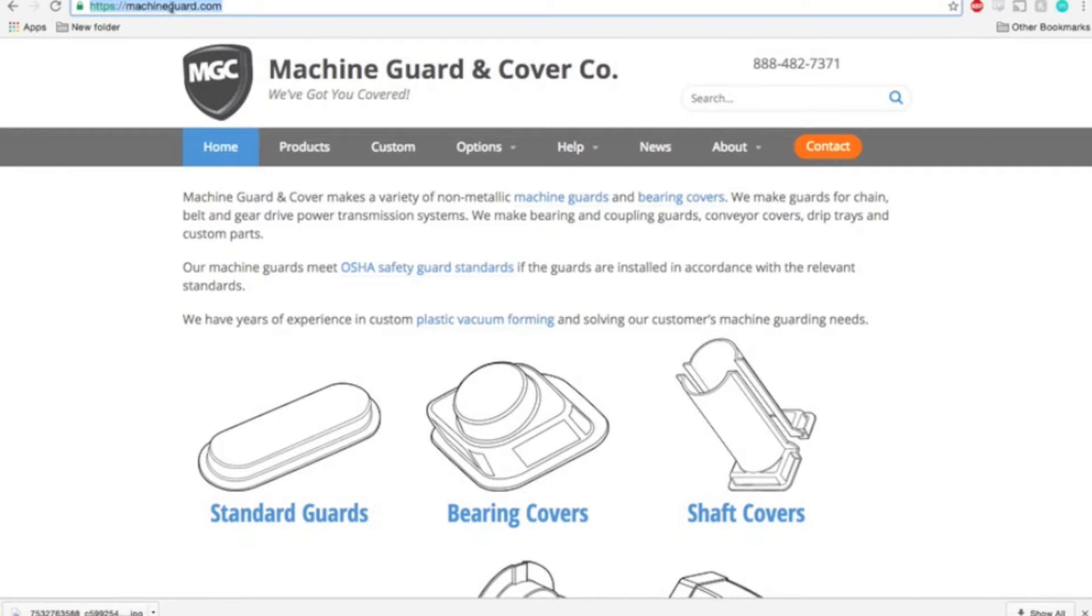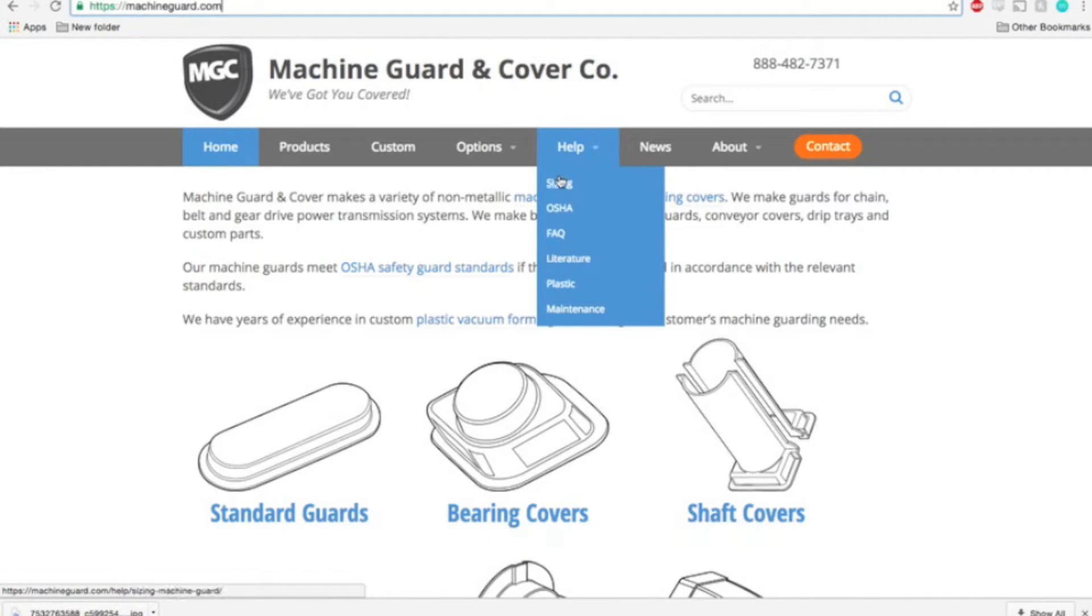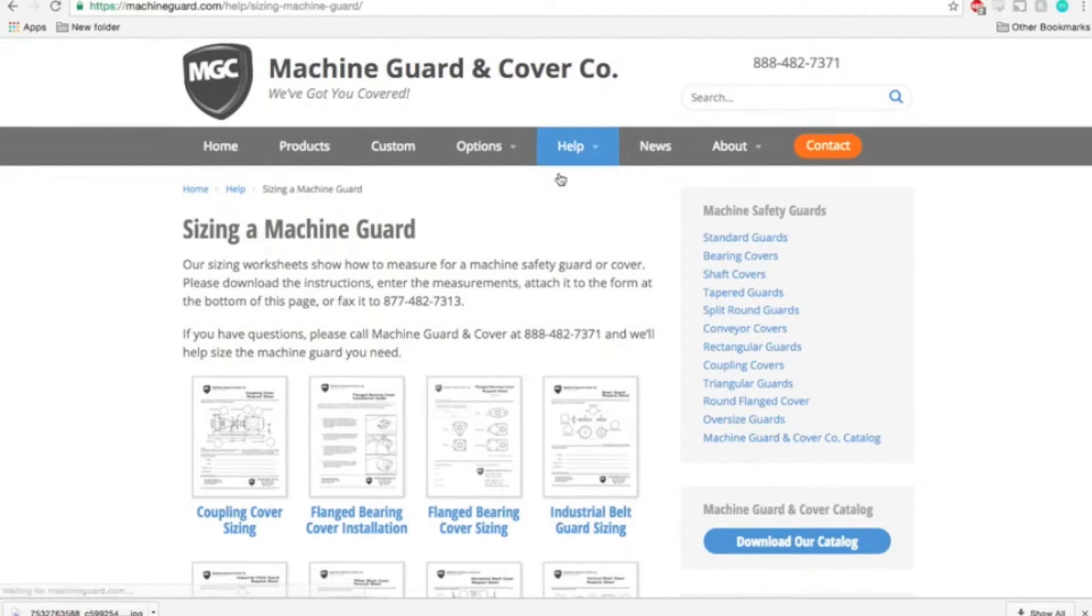The first step for finding your guard is to visit MachineGuard.com. On the home page, locate the drop-down menu labeled Help. Click on this and select the link for sizing.